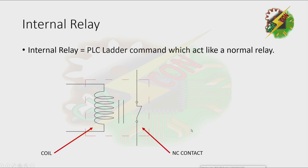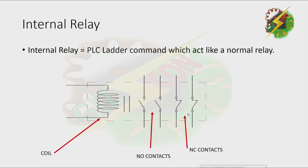And we have a normally closed contact — when the coil is energized, the contact will open. And we have a multiple contact. When the coil is energized, normally open will close and normally closed will open. It is the same principle with PLC.